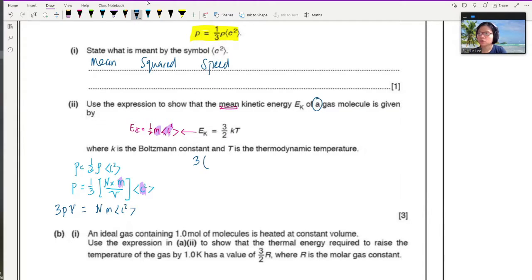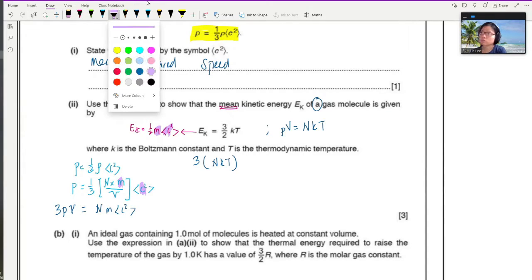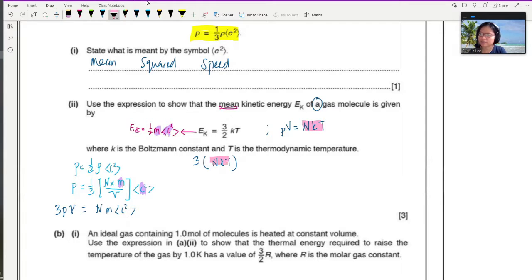I will bring this one up, I will get 3 pv will be equal to N m c squared. My friends, we need a half. So I'm going to introduce a half and also substitute my pv. So what is pv? We also know that pv is equal to N k T. So I'm going to substitute N k T here.